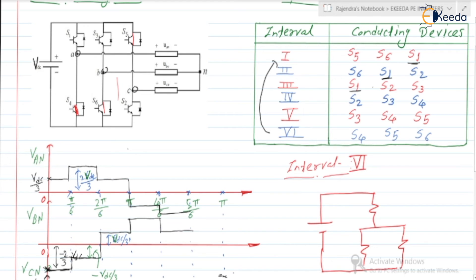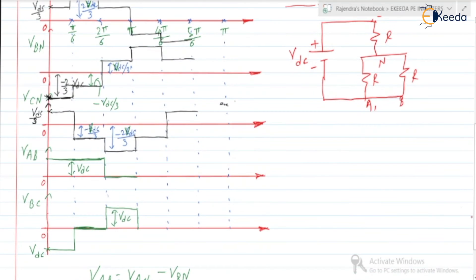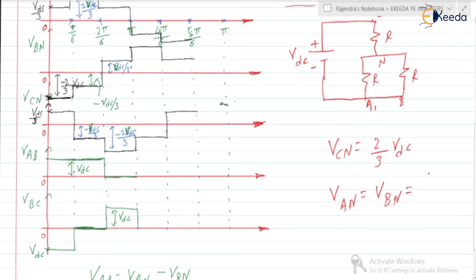So phase C is connected to the positive plate of VDC, and the remaining two phases, A and B, go to the negative plate of VDC. The circuit has VDC plus/minus, R, R, and the neutral point R, with phase C on the positive side and phases A and B on the negative side. R and R are in parallel. So VCN equals 2VDC/3, and VAN equals VBN equals minus VDC/3.